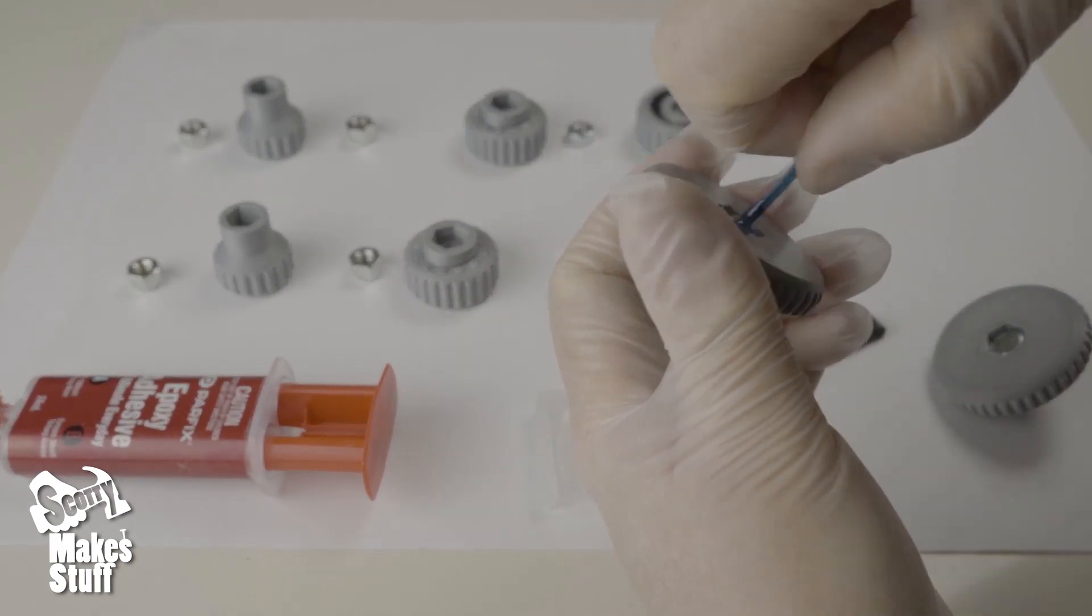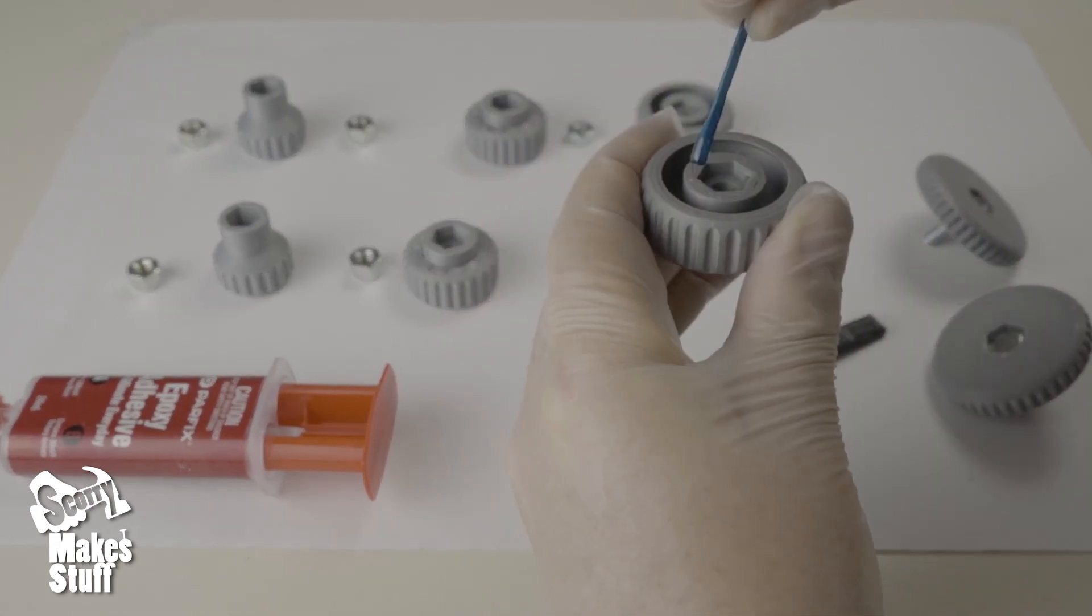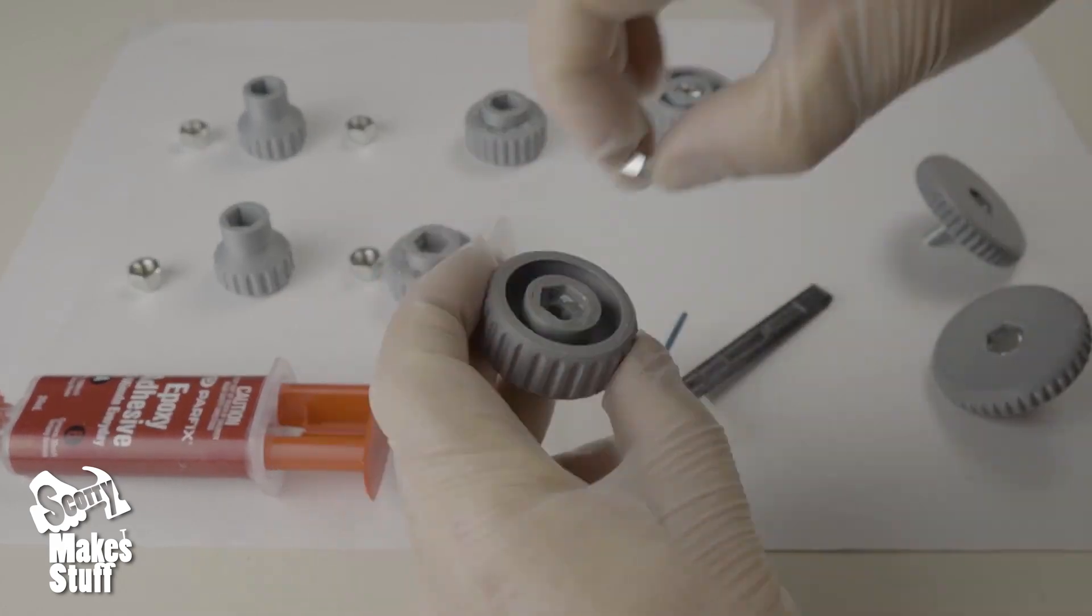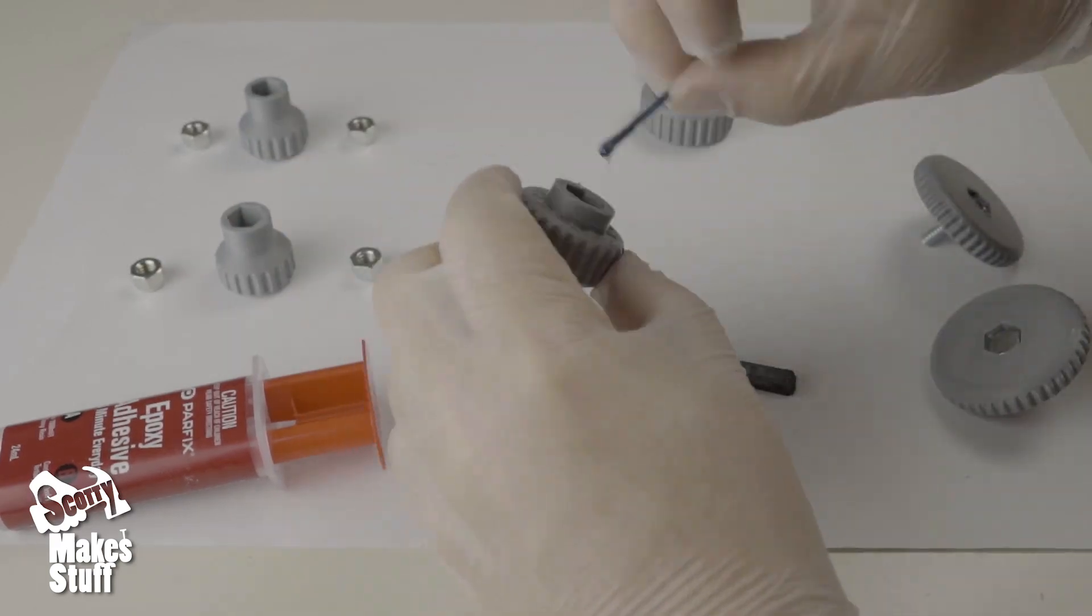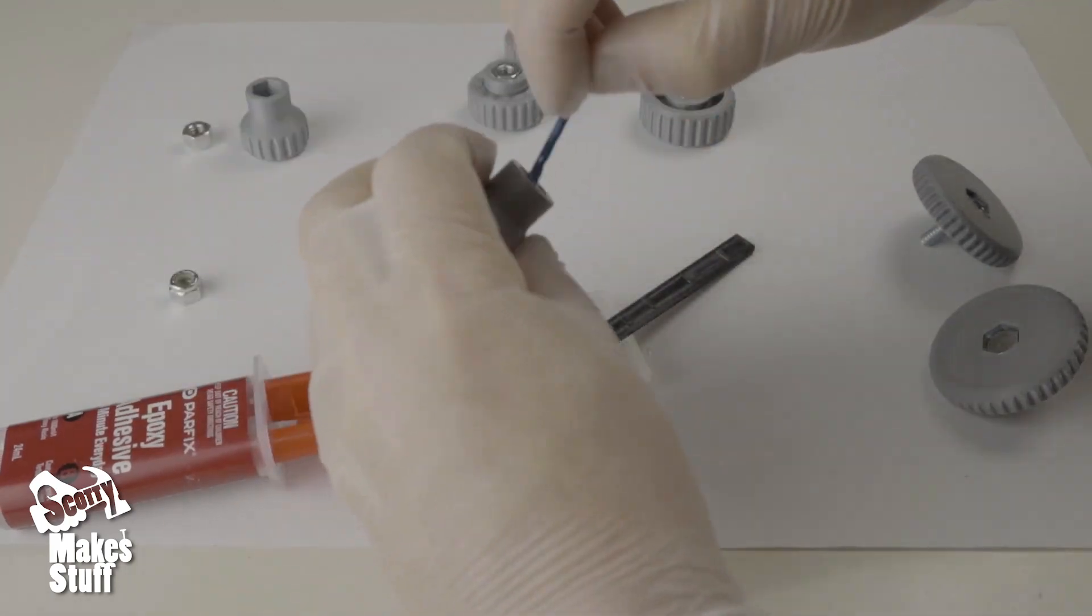We're trying to glue the outside of the nuts and bolts together without getting any on the threads. I use a matchstick to get right in there, but a toothpick would be even better. Clean up any excess epoxy before leaving aside to set. I add a nut to the bolts to make sure they set straight.